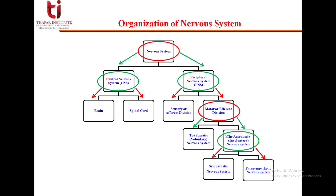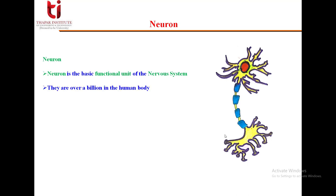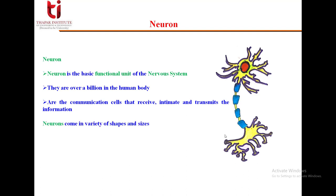Now let's move over to the next part — the neuron. What is a neuron? What is the structure of a neuron, and what is its main function in our body? The neuron is the basic functional unit of the nervous system. There are over a billion neurons in a human body. They are the communication cells that receive, initiate, and transmit information. Neurons come in a variety of shapes and sizes.